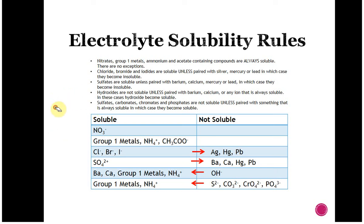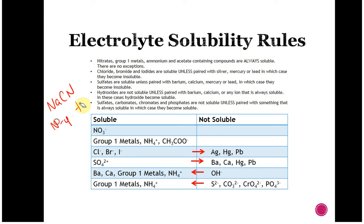Group one metals, anything with ammonium, and anything with acetate are going to be soluble. So it doesn't matter if we have sodium cyanide or ammonium hydroxide — these things are completely soluble and they are going to be strong electrolytes. So nitrates, group one metals, ammonium, and acetate-containing compounds are always soluble with no exceptions. The only caveat is acetic acid — because it is a weak acid, it counts more as a weak electrolyte, but it is still soluble.